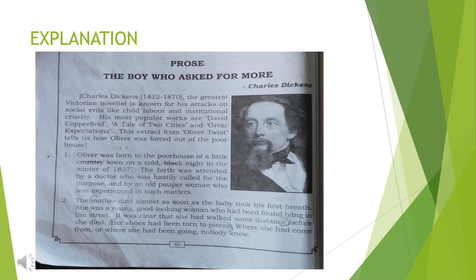The story begins with the birth of Oliver, who is the main character. Oliver was born in a poor house of a little country town on a cold, dark night in the winter of 1837. His birth was attended by a doctor who was hastily called, and also by an old, experienced pauper woman — a poor woman experienced in such matters.